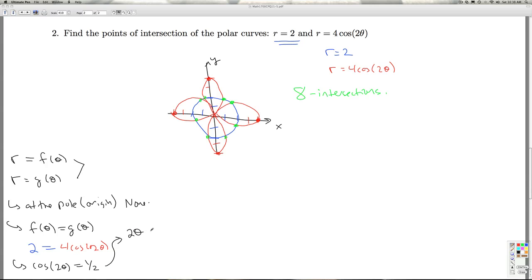Which means 2 theta is either pi over 3 plus some multiple of 2 pi. So that gives me theta is pi over 6 plus some multiple of pi, or theta is 5 pi over 6 plus some multiple of pi.